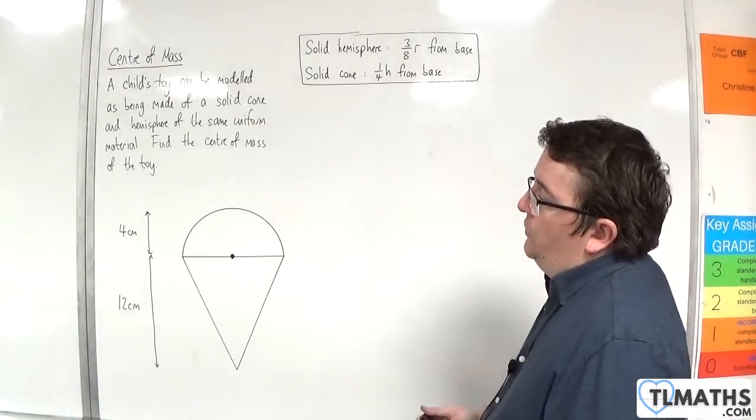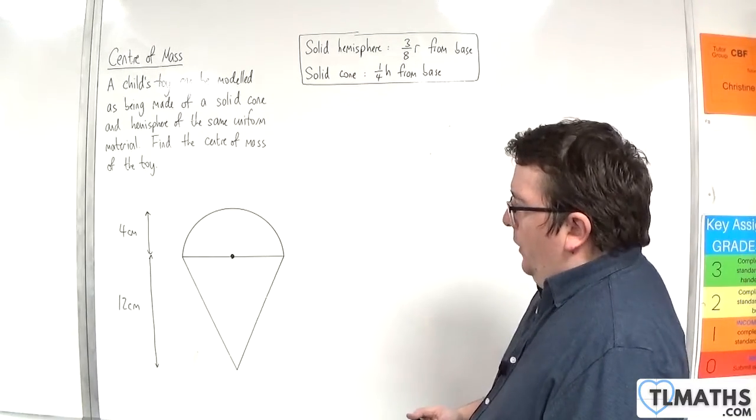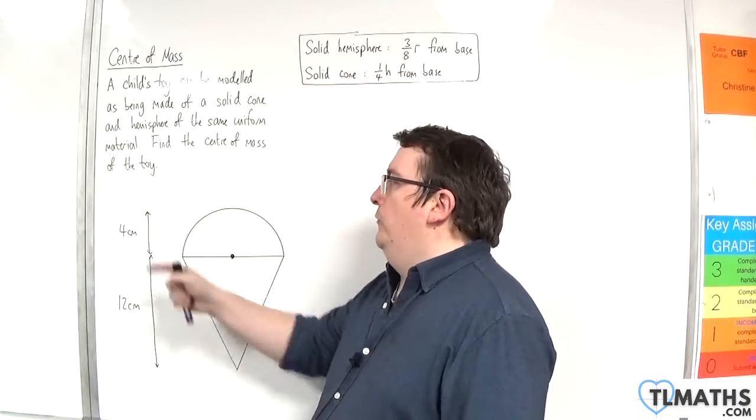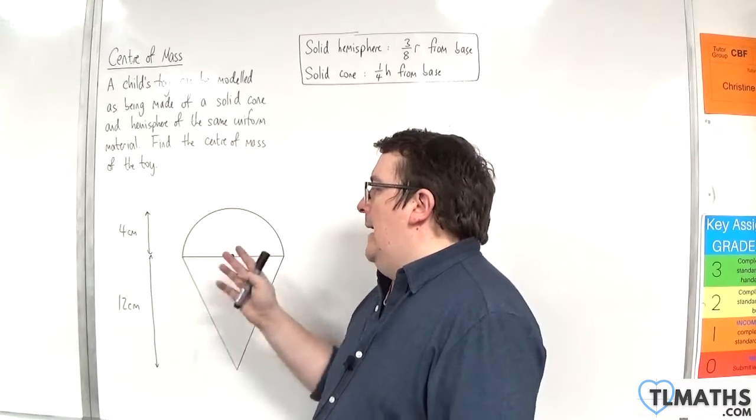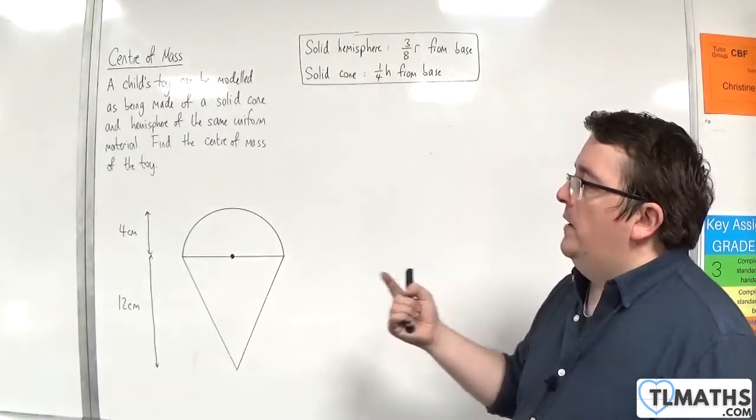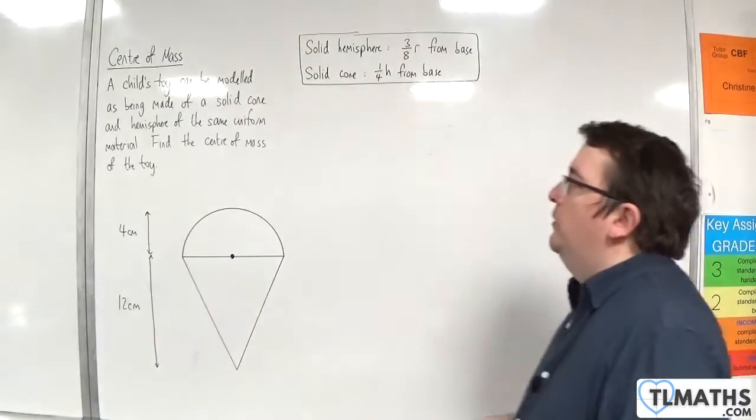Find the center of mass of the toy. So we have a hemisphere with a radius of 4 centimeters, and then we've got this cone with a base radius of 4 centimeters and a height of 12 centimeters.